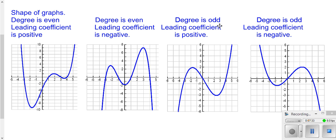If it's an odd degree — like a cubic — as you go far to the right it's going to go up, and as you go far to the left it's going to go down. If it's odd and negative, it flips upside down: going far right it goes down forever, going far left it goes up forever. If it's an odd degree higher than 3 it will probably have more bumps in the middle, but the overall end behavior shape remains the same.